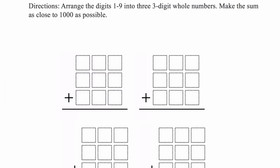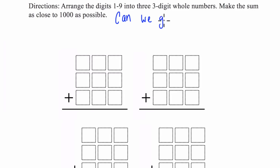Hello, welcome. In one of the last videos, we looked at this problem where we take the digits 1 through 9 and try to arrange them into three three-digit numbers to get a sum as close to 1,000 as possible. One thing you might wonder is if we can get 1,000 at all, and that's the question we're going to address in this video.